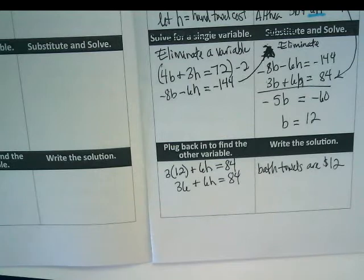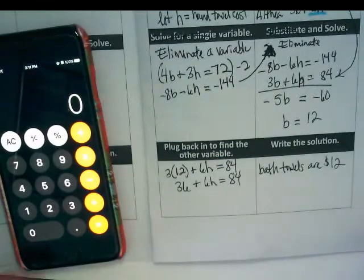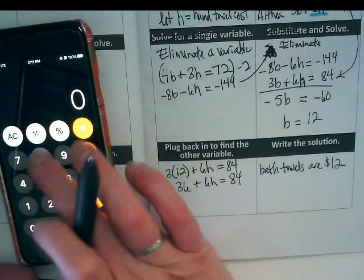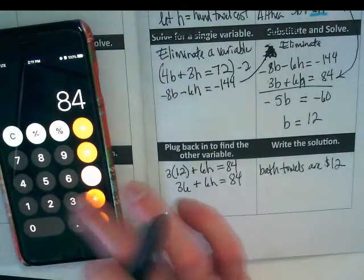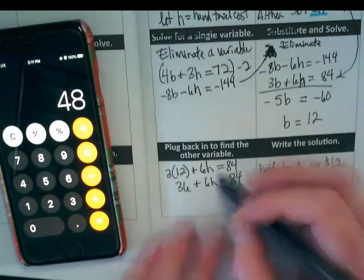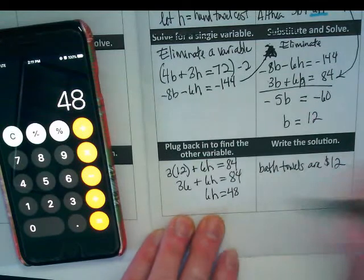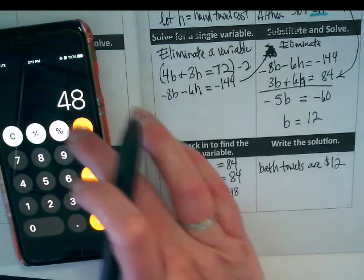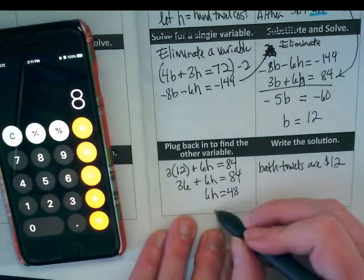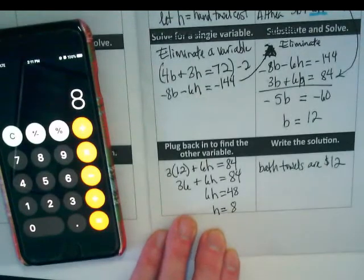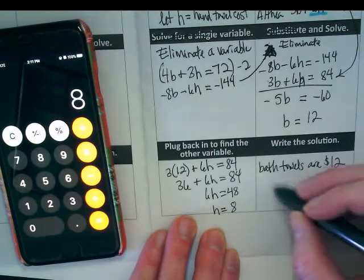I get 36 plus 6h equals 84. I'm going to subtract. 84 minus 36 gives me 48. So 6h equals 48. What's my h equal? Hand towels are $8 each.